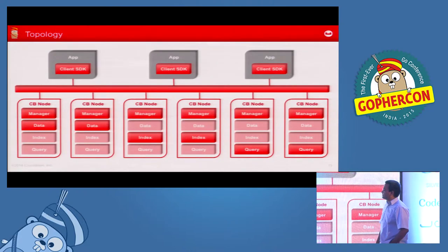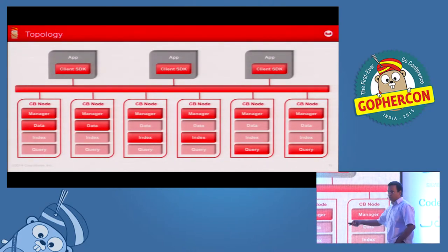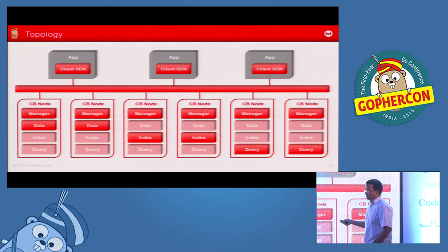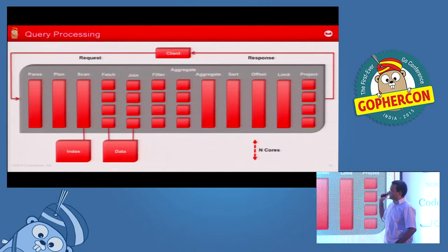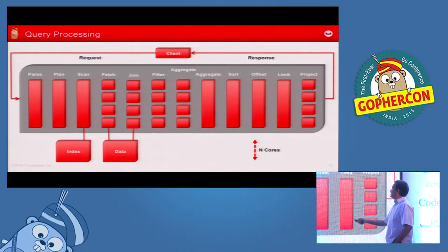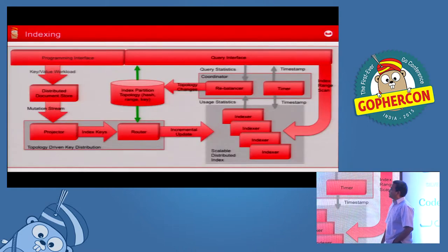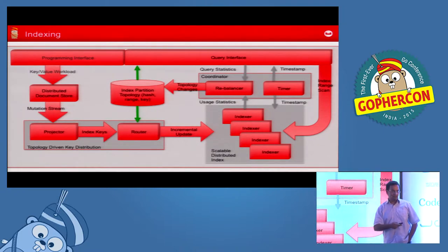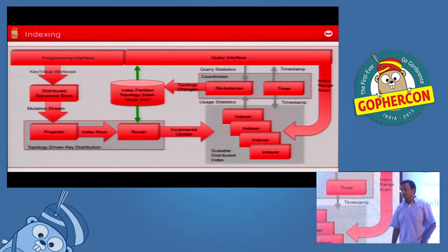Here is how it looks. It's a distributed database — some nodes run indexes, some nodes run query, some nodes hold KV data. It's hash partitioned, and the indexes are range partitioned. This is our query processing pipeline, going through the usual phases of parsing, planning, scanning, fetching. This is our indexing pipeline, where we take hash partitioned data and make it into range partitions, and we deal with consistency timestamps, because in a distributed database, consistency is a difficult concept.